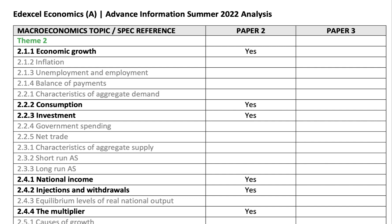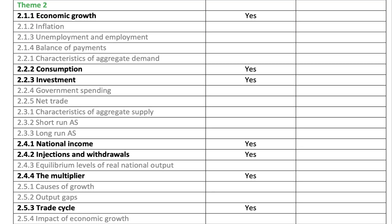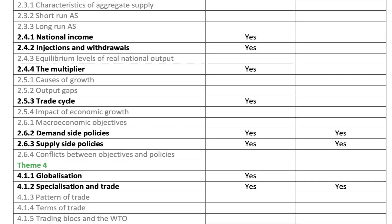For theme two, they have included economic growth, but taken out some of the key macro objectives. Inflation, unemployment, and balance of payments are all excluded from paper two. The focus on your macro seems to be consumer spending and saving, the economics of investment, national income, injections and withdrawals into the circular flow, and the multiplier. Out for 2022 are the causes of economic growth, output gaps, the impact of growth, and macro objectives. So inflation and unemployment and the balance of payments have been taken out as key areas for detailed study.